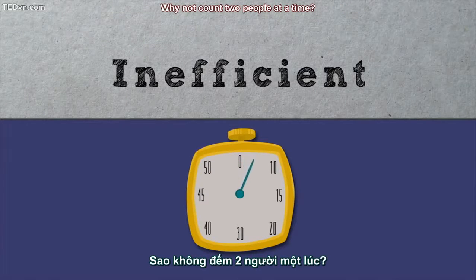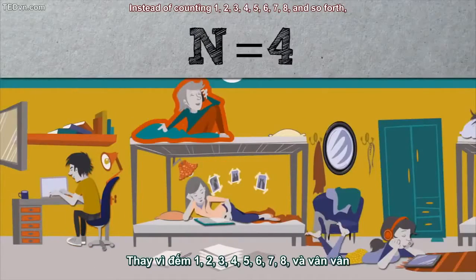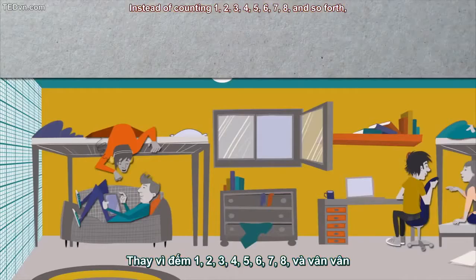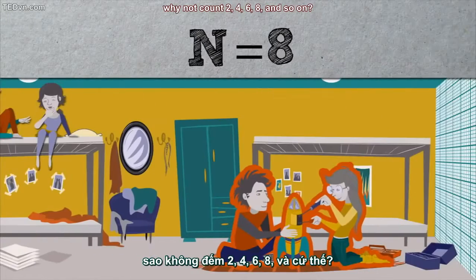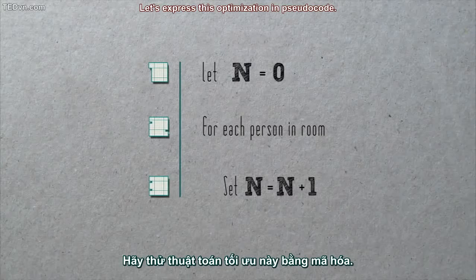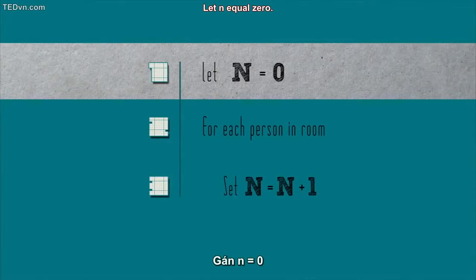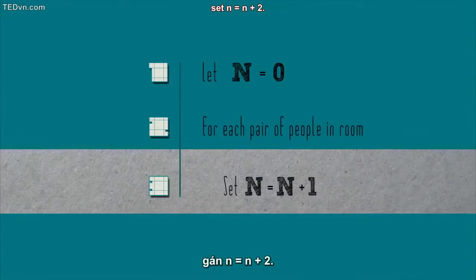Why not count two people at a time? Instead of counting one, two, three, four, five, six, seven, eight, and so forth, why not count two, four, six, eight, and so on? It even sounds faster, and it surely is. Let's express this optimization in pseudocode: let n equal zero. For each pair of people in room, set n equal to n plus two.